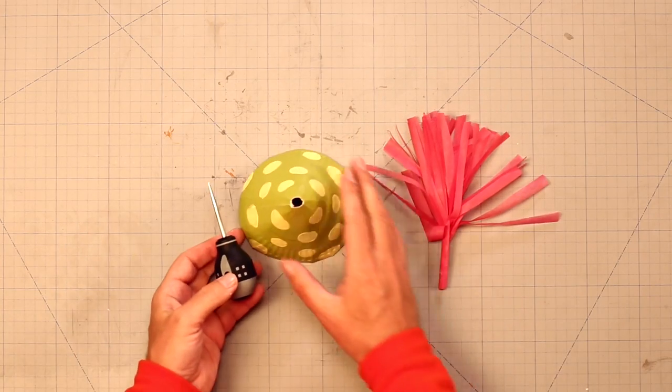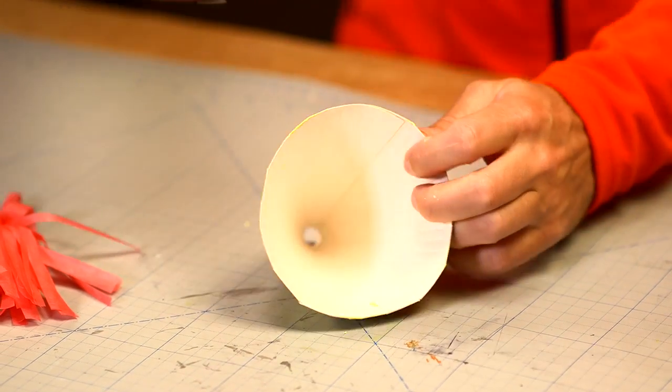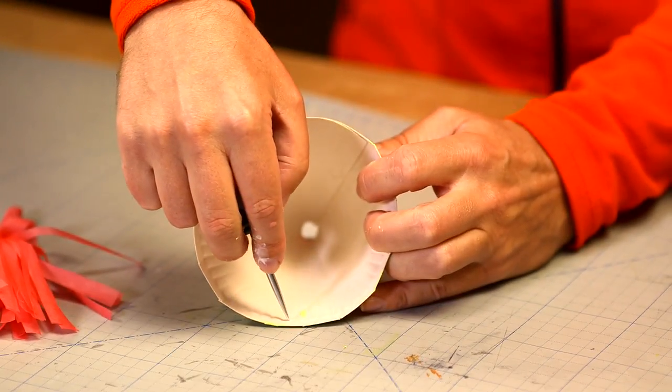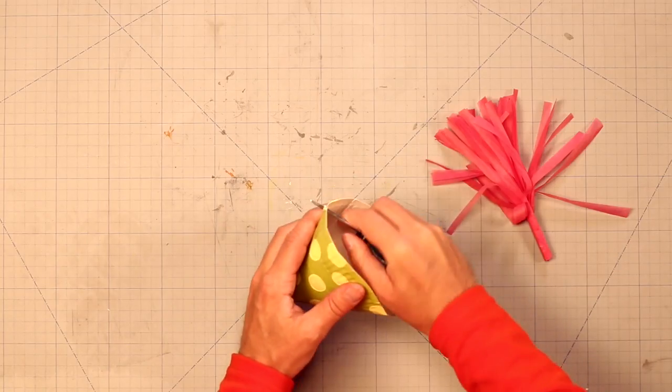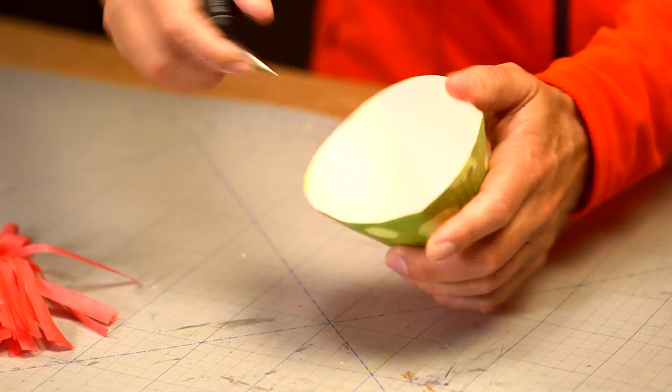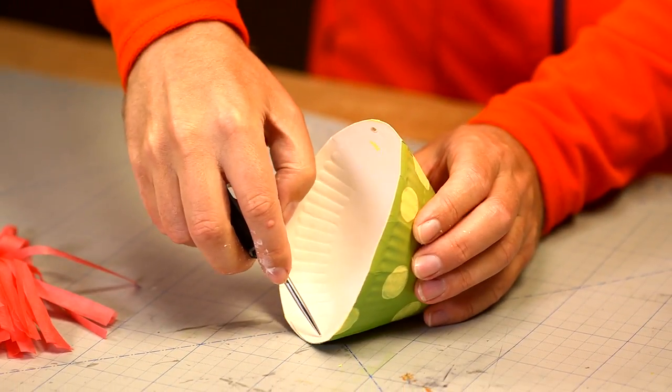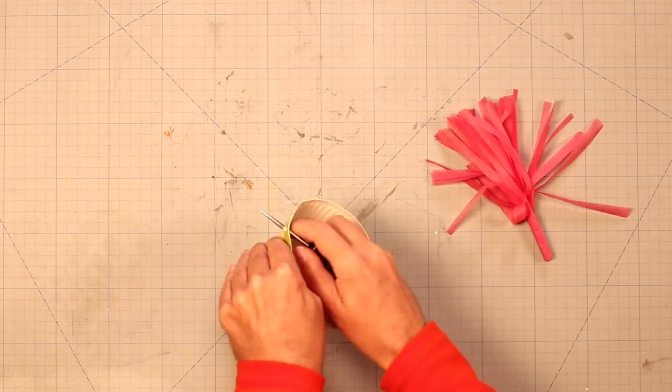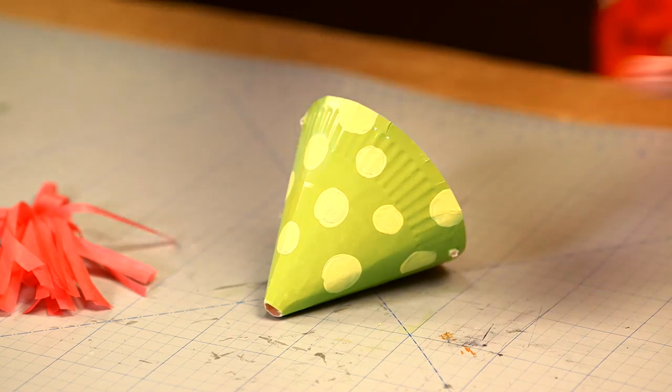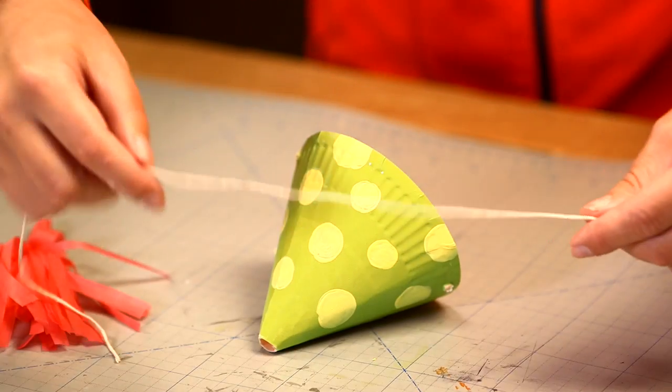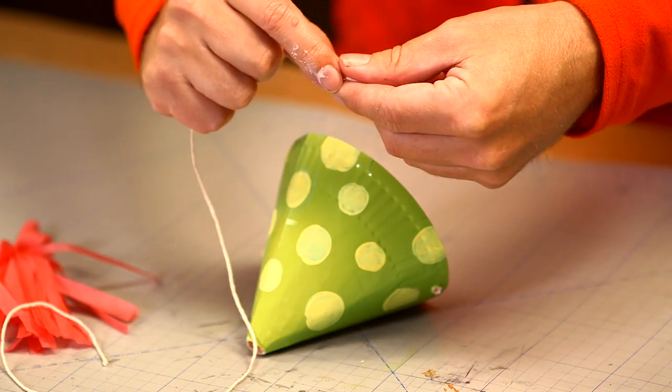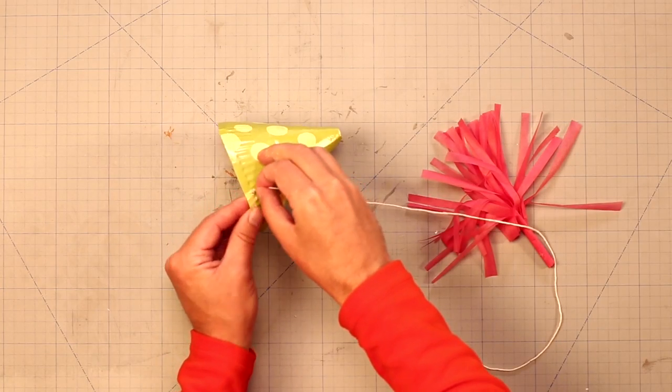Next, use a sharp instrument to poke two holes in the sides. Now we'll make a string to put underneath the chin so that the party hat stays on top of the head.